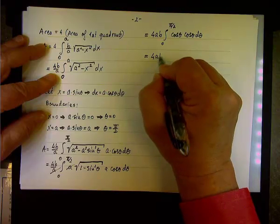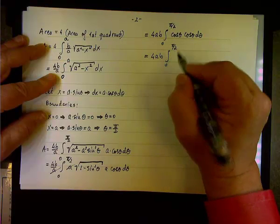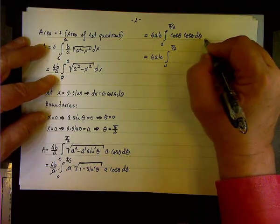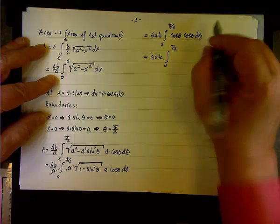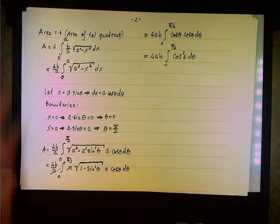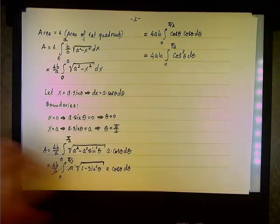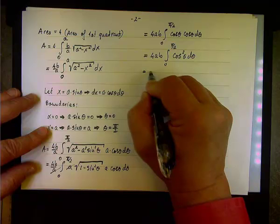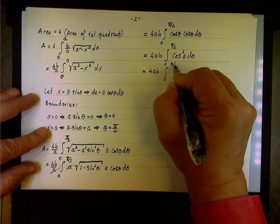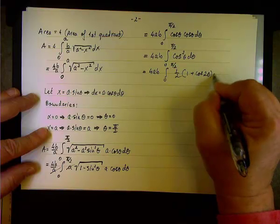To handle cosine squared theta, we use the half-angle identity — we cannot use 1 minus sine squared because the differential is only d theta. So cosine squared theta equals one half times (1 plus cosine 2 theta), giving us 4ab times the integral from 0 to pi over 2 of one half times (1 plus cosine 2 theta) d theta.